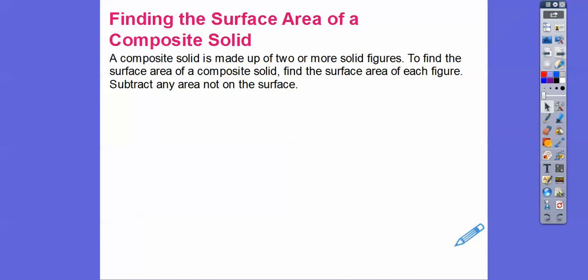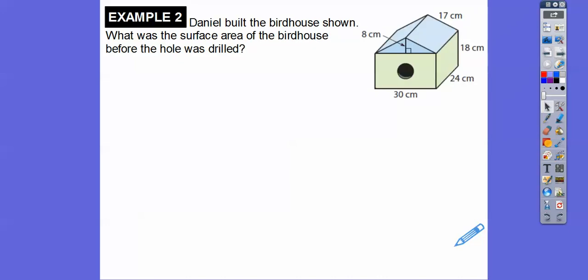Now let's find the area of composite figures. A composite solid is made up of two or more solid figures. To find the surface area, we find the area of each figure and subtract any area that's not on the surface. Daniel is building a birdhouse. What's the surface area of the birdhouse before the holes are drilled? We'll pretend the hole isn't there and find the whole surface area.